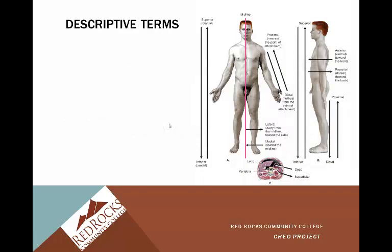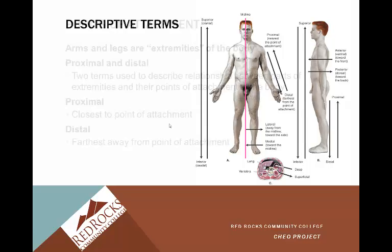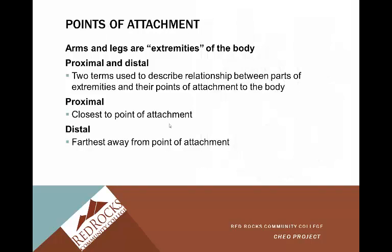Some descriptive terms are in your book as well. A really important one is proximal — nearest to the point of attachment to the body — whereas distal is farthest from the point of attachment. Lateral means away from the midline, and medial means toward the midline. Just getting used to these different descriptive terms is important. Arms and legs are called extremities of the body. Proximal and distal are two terms used to describe the relationship between parts of extremities and their points of attachment to the body.